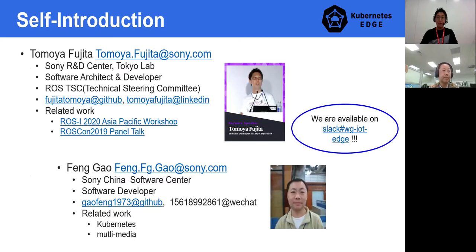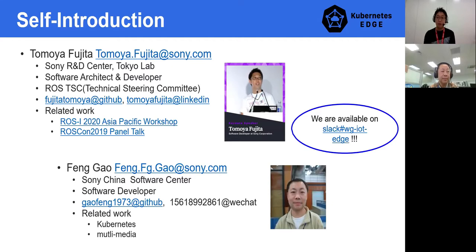My name is Tome Fujita with Sony R&D Center at Sony Corporation. I am a software architect and developer, mostly working on system services, middleware like ROS, and Kubernetes in open source. I am also a member of the Robot Operating System Technical Steering Committee. I am Feng with Sony China, responsible for software such as Kubernetes and the multimedia framework. Please feel free to reach out to us anytime. We will be available on the Slack channel, org-iot-edge.